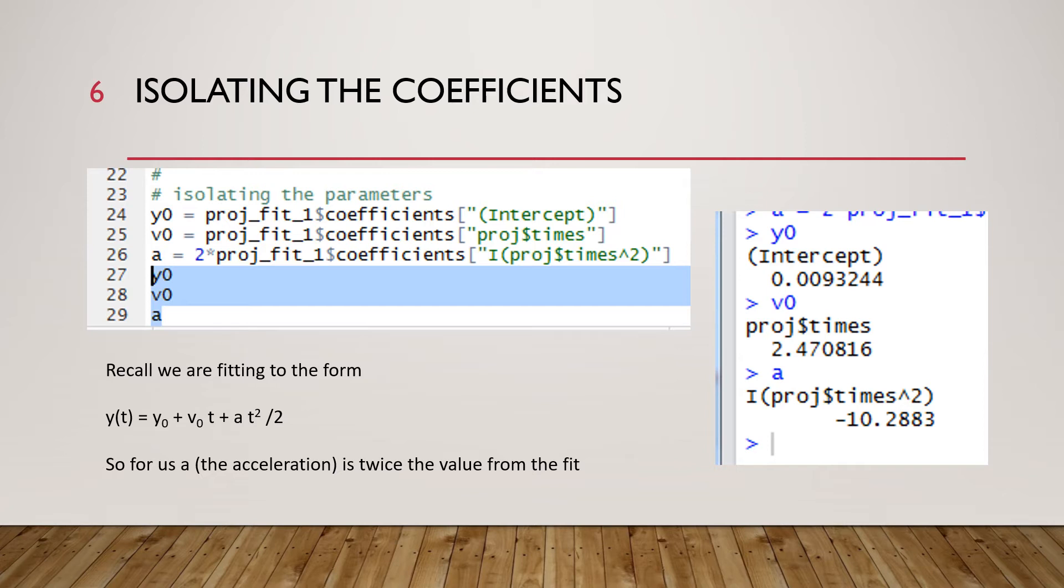We can in lines 24, 25, and 26 extract these values from our fit. So proj underscore fit underscore one is our fit, it has coefficients so proj underscore fit underscore one dollar sign coefficients and then we recall that that is a vector with named components. So one is called parenthesis intercept with a capital I, what I often call the slope was proj dollar sign times, and then the square term was I parenthesis proj dollar sign times caret 2 close parenthesis and then we remember that if I want the acceleration I have to multiply that by 2.